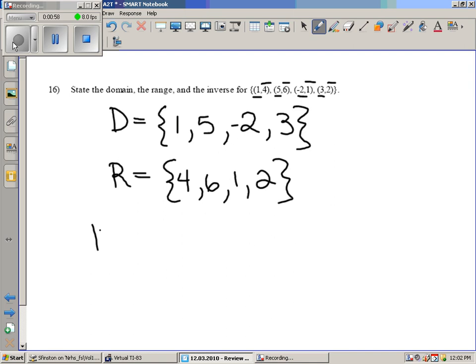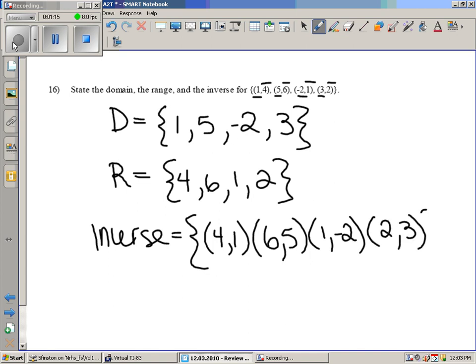And how do you find the inverse? Well the inverse as we talked about is just what happens when you switch the x and the y values. So the inverse of this particular function would be 4, 1, 6, 5, 1, negative 2, and 2, 3. And that's it. Final answer.